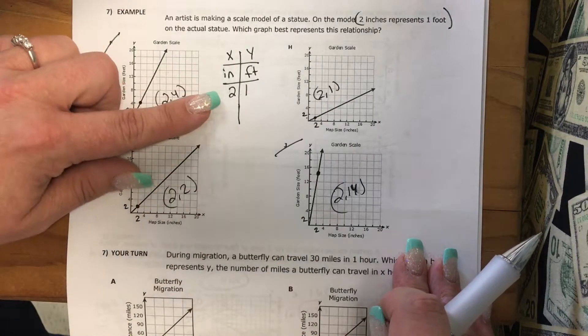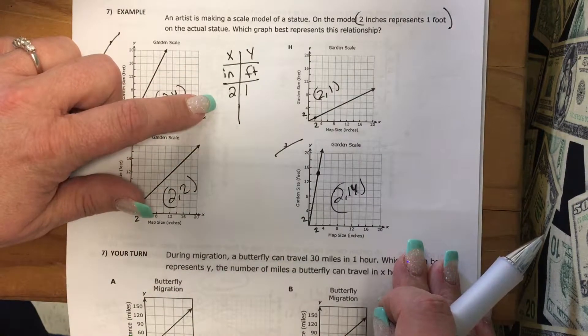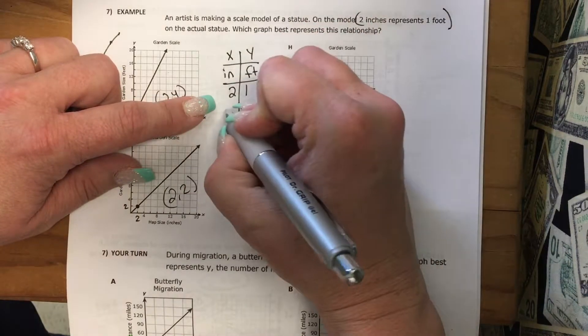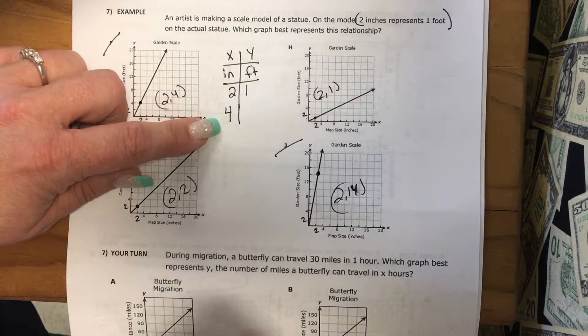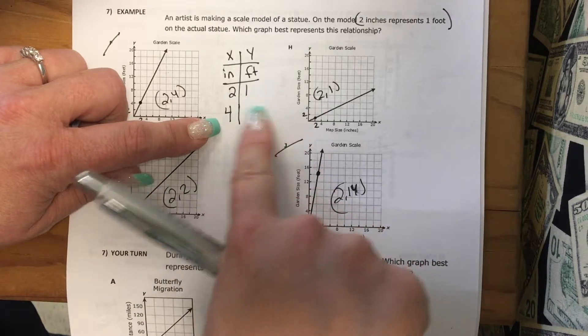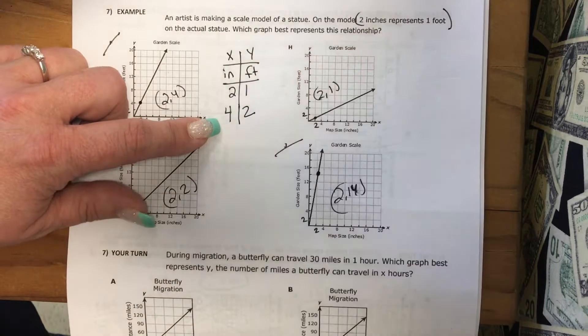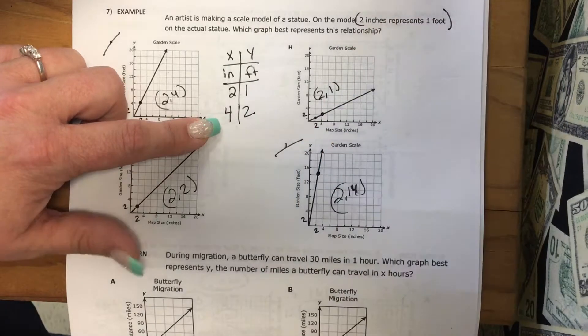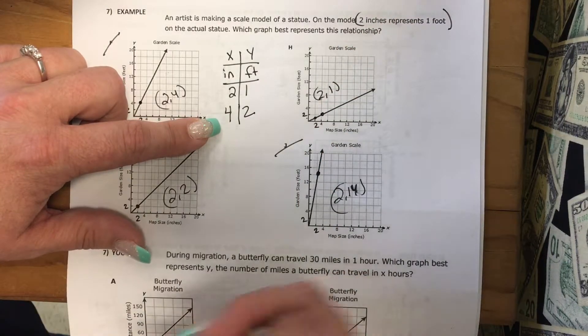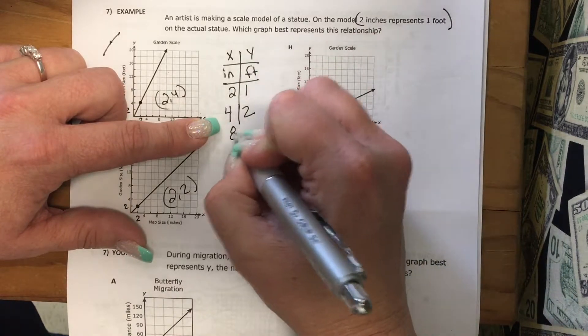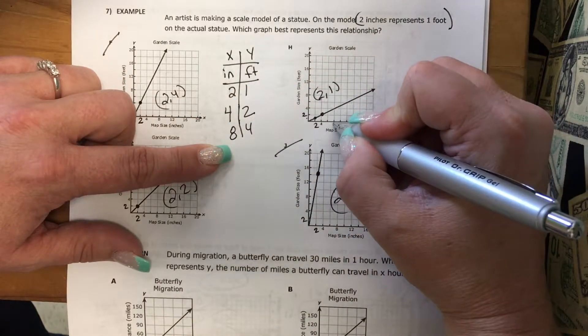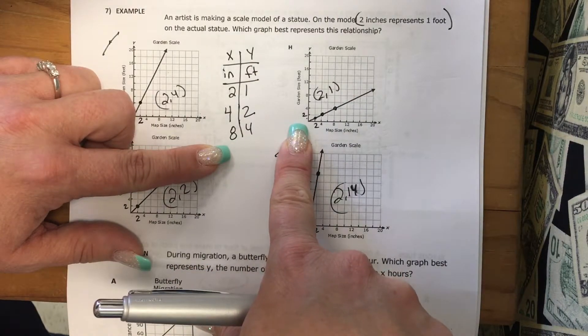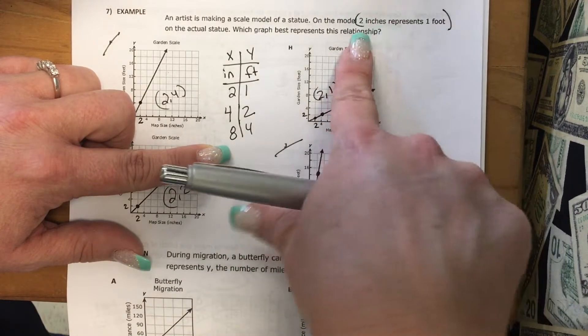So I could give myself some more points. I could double this. So if instead of 2 inches, I had 4 inches, well, if every 2 inches is 1, then if I'm doubling it, I would get 2 feet. So my next point should be 4 and 2. So 4 and 2 is right there. And I could keep going. I could do 8, I could double it again. 8 and 4. 8 and 4 is right there. So this graph H represents this relationship.